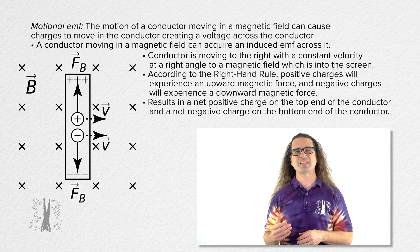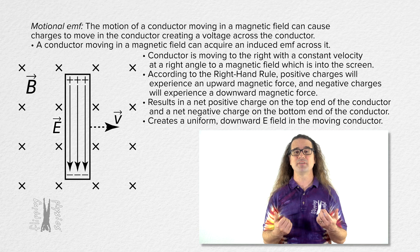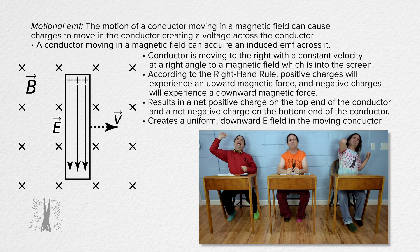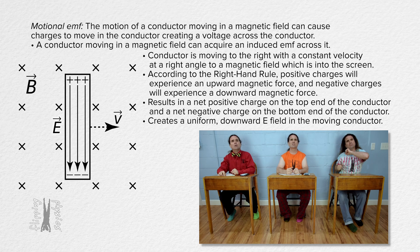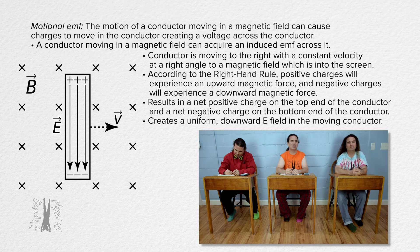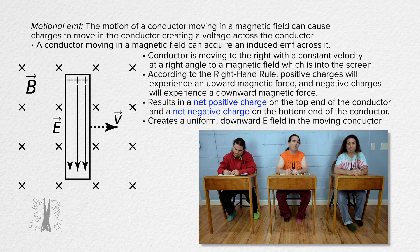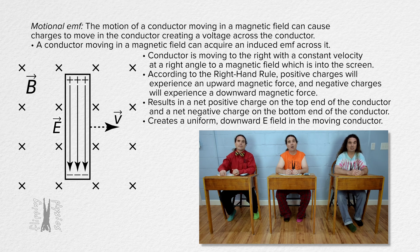This will cause the charges to move, with the final result being that there will be a net positive charge on the top end of the conductor and a net negative charge on the bottom end, creating a uniform downward electric field in the moving conductor. Only electrons move in conductors — that's what makes them conductors. He used the phrase 'net charge' because the positive end lost electrons and the negative end gained electrons.